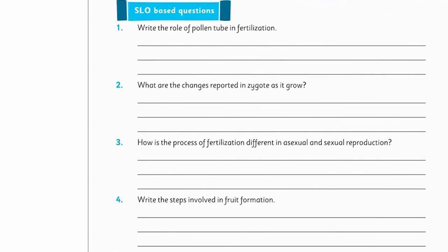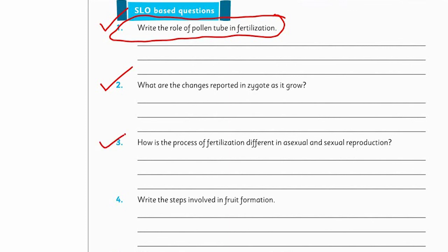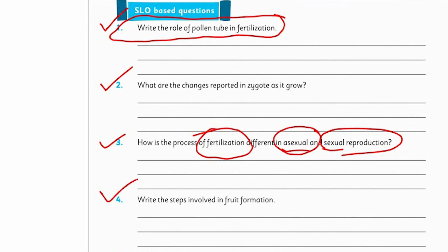From page 35, solve question number 1: What is the role of the pollen tube in fertilization? Then question number 2: What are the changes reported in the zygote as it grows — list them briefly. Question number 3: How is the process of fertilization different in sexual and asexual reproduction? Compare both types and identify if fertilization occurs in both or only in one, and explain the difference. Then solve question number 4: Write the steps involved in fruit formation, as fruit formation is the next step after fertilization.